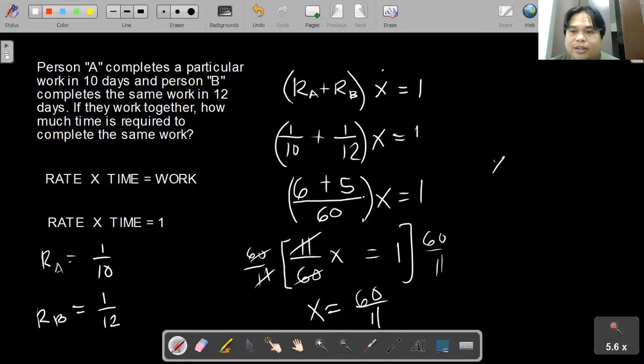Or further simplify that into a mixed number. That becomes 5 and 5/11 days. So this means that if they work together, it will only take them a little more than 5 days to complete the same amount of work.